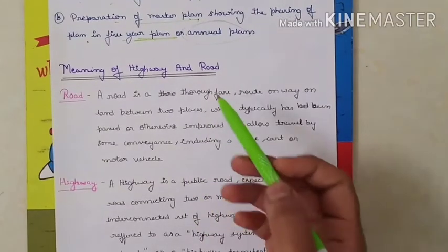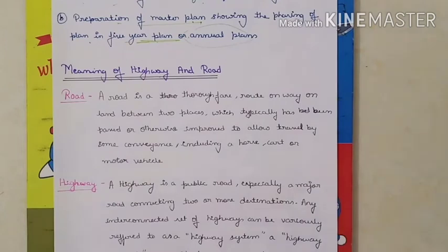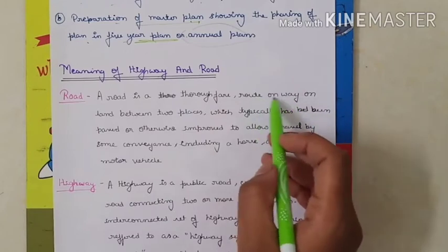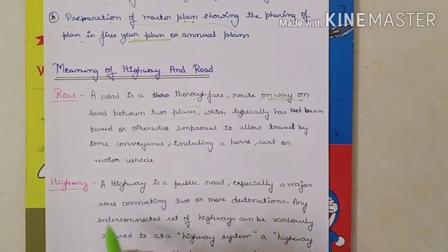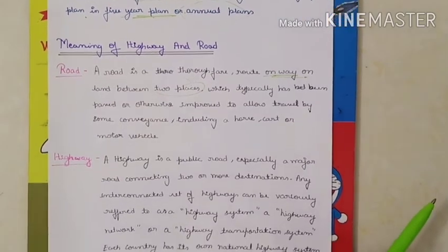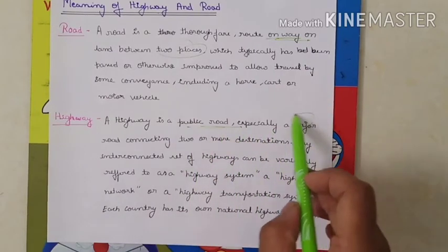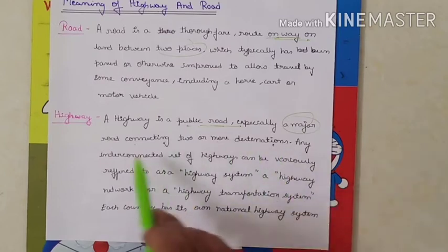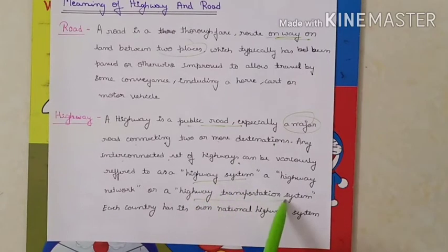There are two terms: road and highway. When we say road, it refers to the route or way between two places, typically being paved or improved to allow travel. But when we say highway, it is a public road, especially a major road connecting two or more destinations. Any interconnected set of highways is referred to as a highway system or highway transportation system.